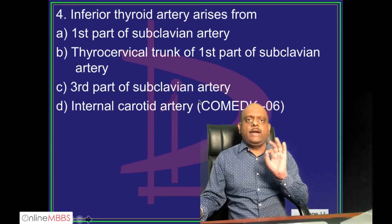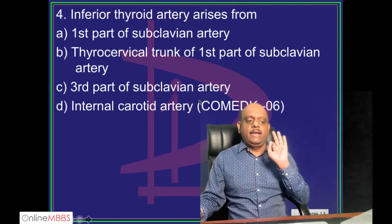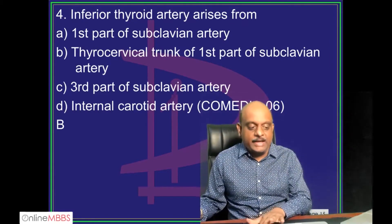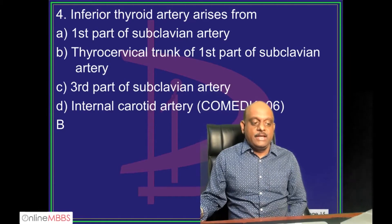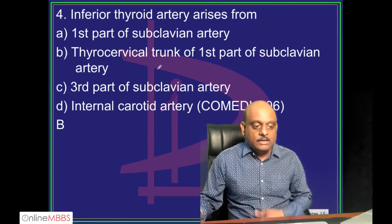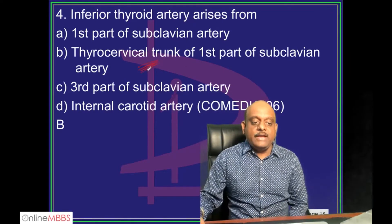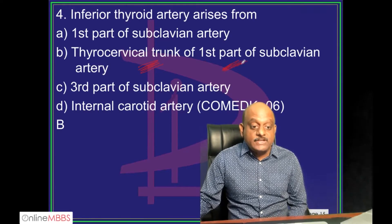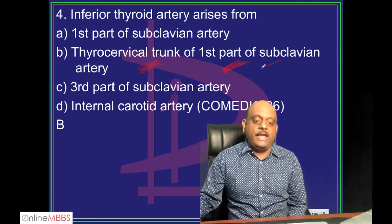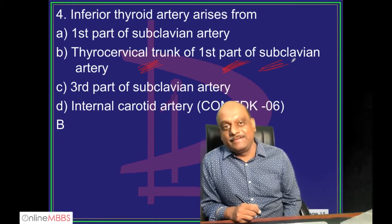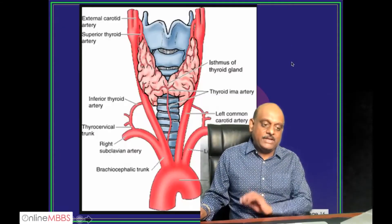Inferior thyroid artery - from where does it arise? It arises from the thyrocervical trunk, which is coming from the first part of the subclavian artery. That is what you need to remember.